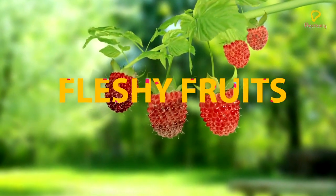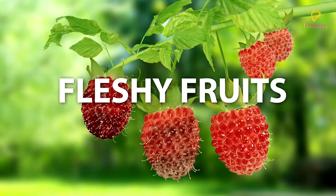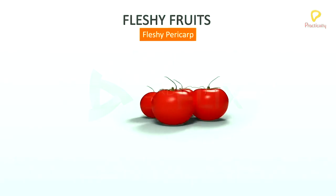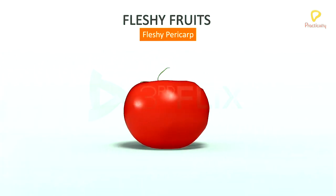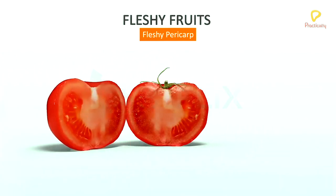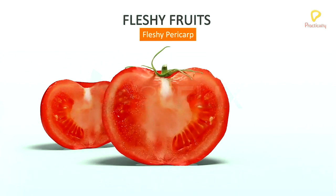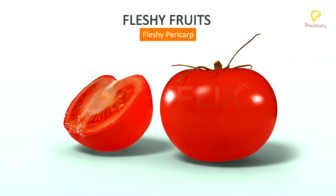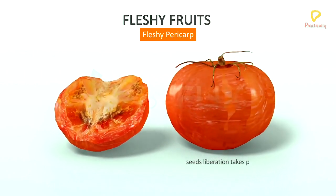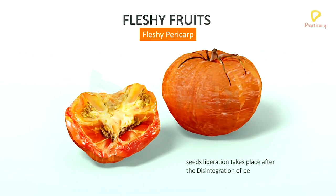Objective: To study about the fleshy fruits. Fruits in which the entire pericarp, or part of it, turns fleshy and juicy at maturity, are called fleshy fruits. In fleshy fruits, the pericarp is fleshy, and at maturity they are differentiated into epicarp or exocarp, mesocarp, and endocarp. In most of the fleshy fruits, liberation of seeds takes place only after the disintegration of pericarp.